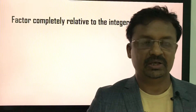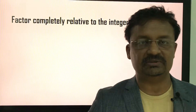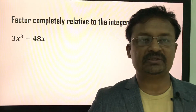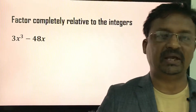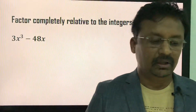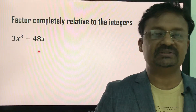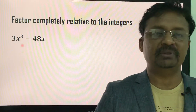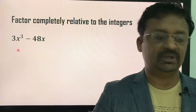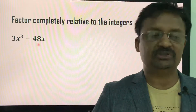Now I will explain with a simple example. The question is: factor completely relative to the integers 3x³ - 48x. There are two terms in this algebraic form, or polynomial. This is a cubic polynomial; the degree of the polynomial is 3.